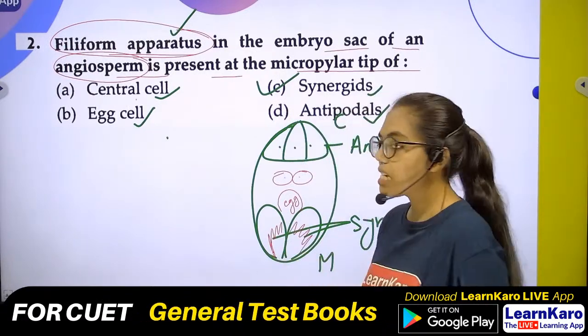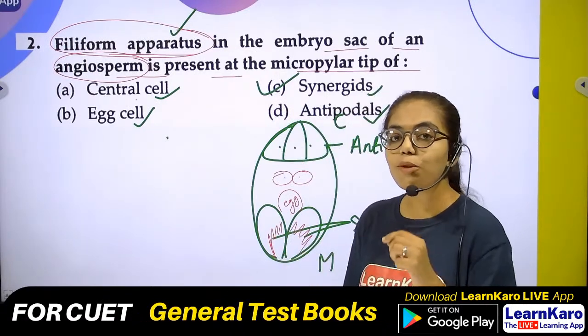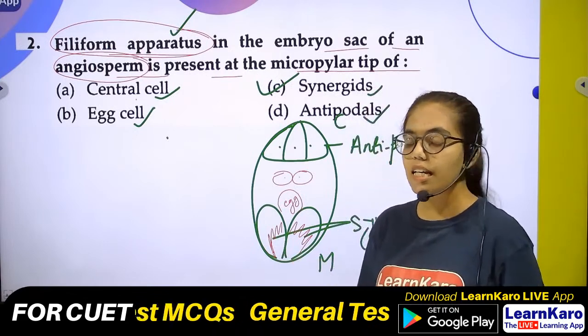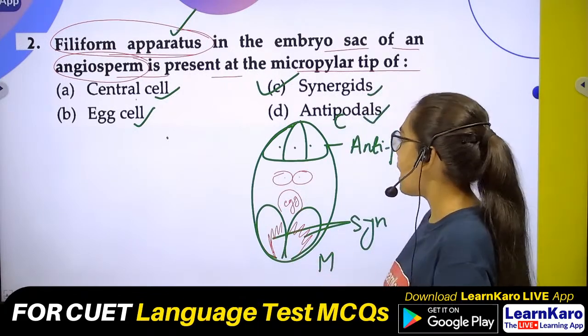The filiform apparatus tries to guide the pollen tube — it directs the pollen tube carrying the male gamete towards the egg.